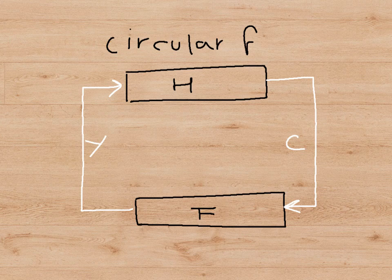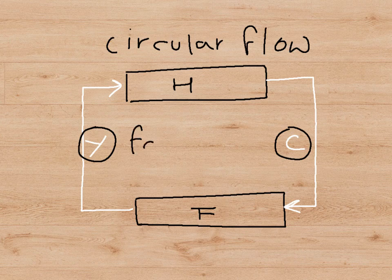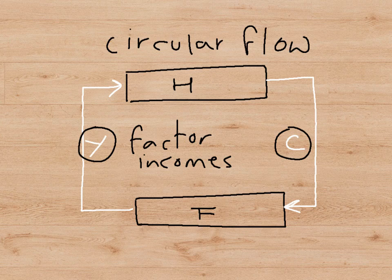The circular flow of money consists of the letter C, which stands for consumer spending or consumption, and the letter Y, which stands for factor incomes. Consumer spending on the one hand is balanced with factor incomes on the other hand. Factor incomes is the income that households earn for supplying land, labour, capital, and enterprise to firms.